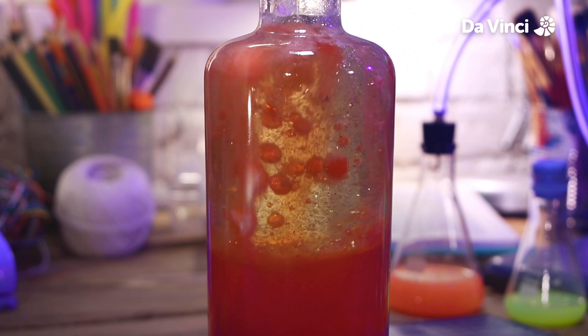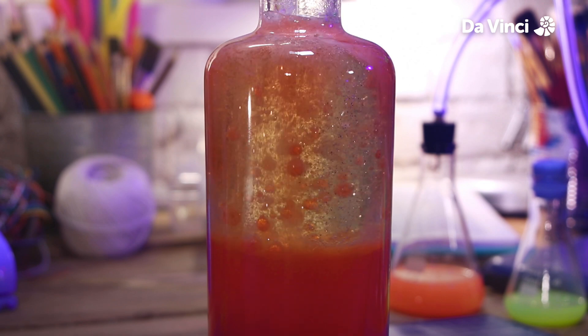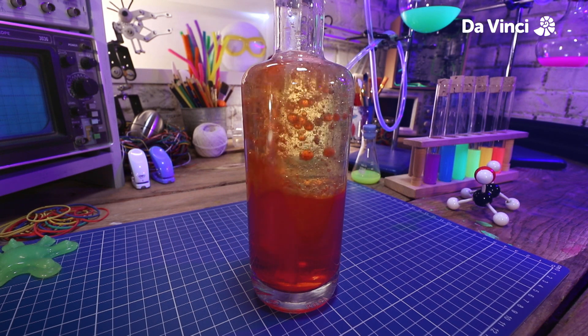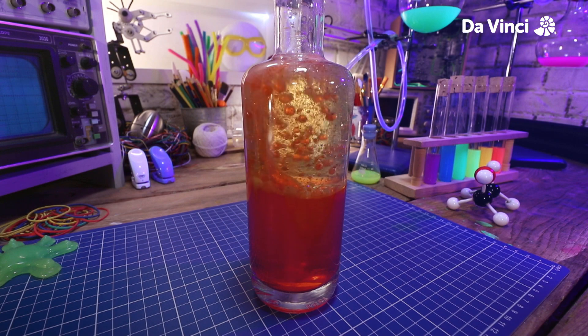These bubbles take some of the colored water with them. Then when the gas bubble escapes at the top of the bottle, the colored water is left on its own and has to fall back down. And that's how we create this wonderful lava lamp look.